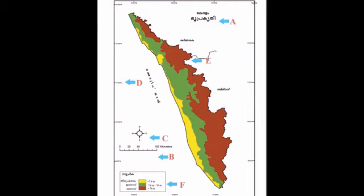A is already available in B. A map is already available in B. This is a great example of B.